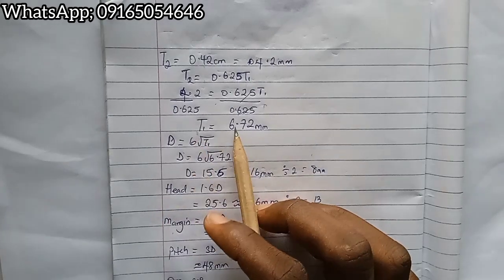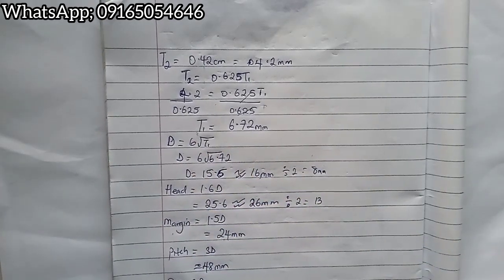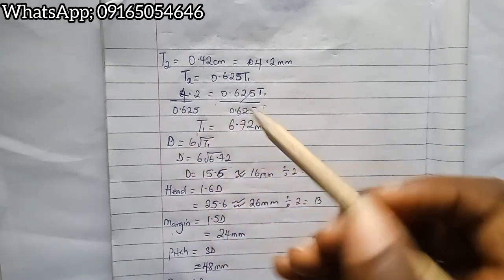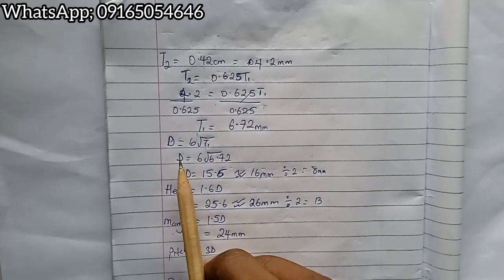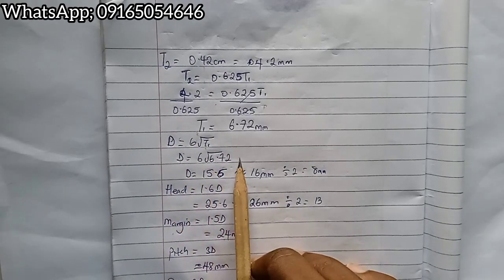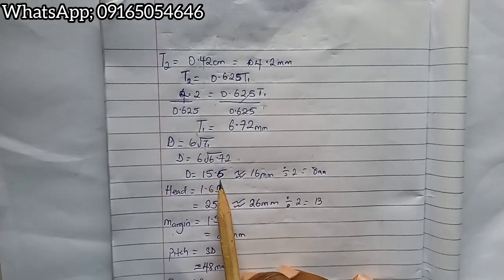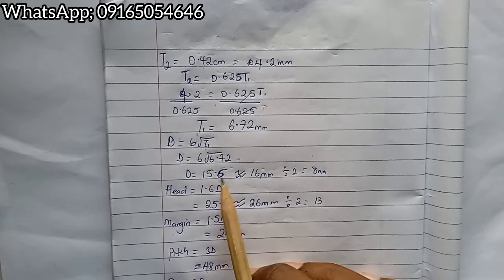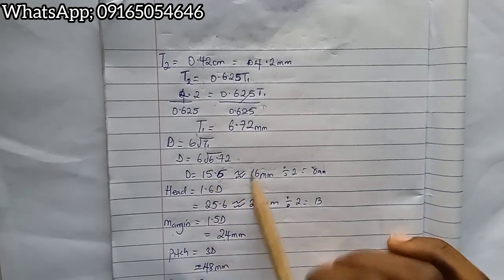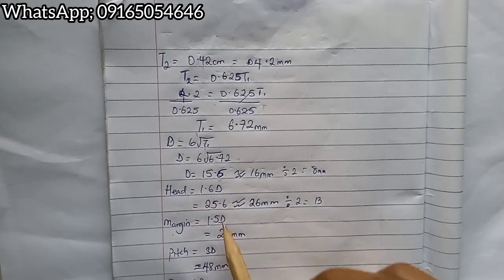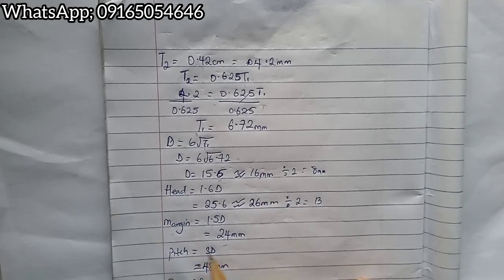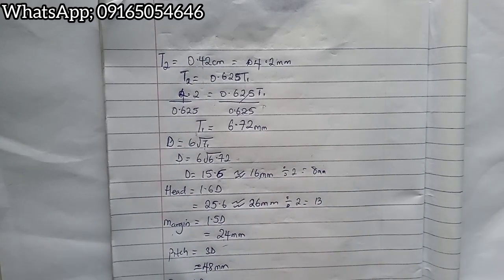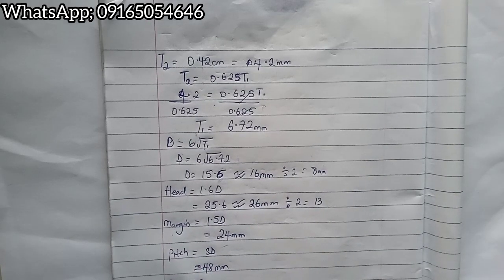This gives t1 to be equal to 6.72 millimeters—that is the thickness of your main plate. With that we can find diameter: D equals 6 root t1, which gives 15.6, but you always approximate to the nearest whole number which is 16. The head is 1.6D which gives 26, margin is 1.5D which gives 24, pitch is 3D which is 48, but 2D goes to 32 millimeters.